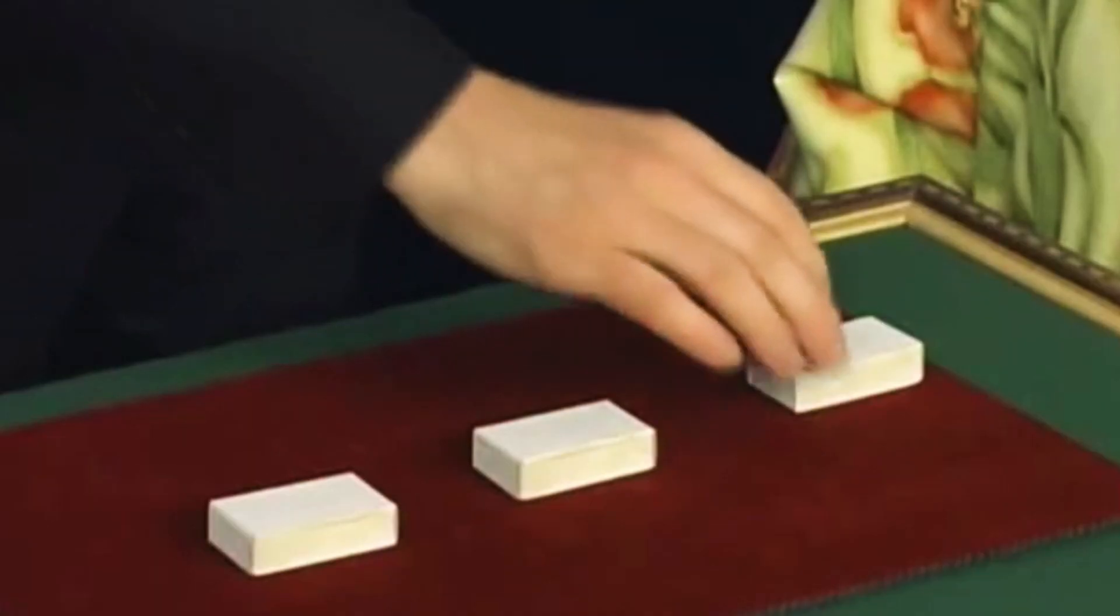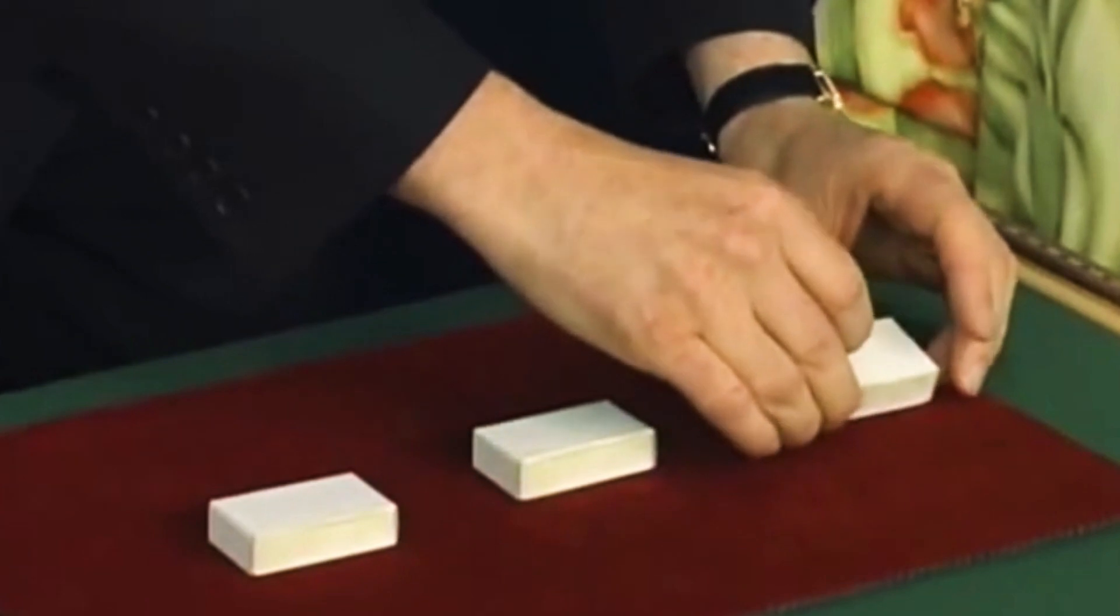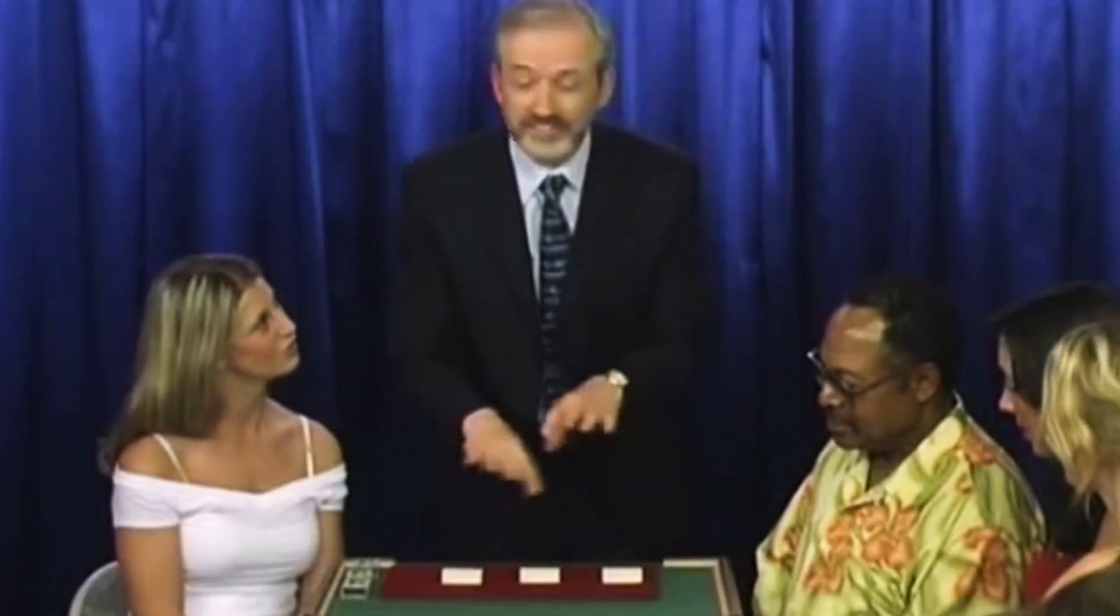But the idea is basically the same. The die is placed under the box. The three boxes are mixed up. Basically, you have to follow where the white die goes.